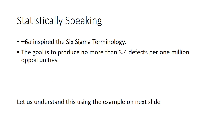There is a statistical reason behind why this continual improvement methodology is called Six Sigma. In statistics, Sigma is the standard deviation, which is the measure of variation. Plus or minus six Sigma inspired the Six Sigma terminology. The goal is to produce no more than 3.4 defects per one million opportunities.